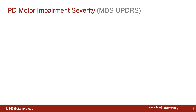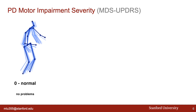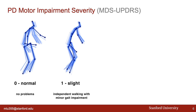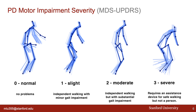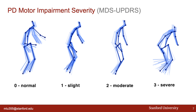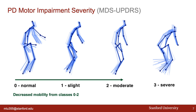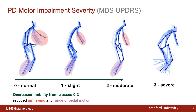In MDS-UPDRS, gait is ranked on a 5-point scale. In these figures, the dark lines represent the current pose, and the fading skeletons show movement over time. When an individual is scored 0, it means they probably do not have problems in their movement. Score 1 means the individual can walk independently but with minor gait impairments, while score 2 refers to substantial gait impairments. Individuals with score 3 require an assistance device for safe walking. We have removed score 4 from our analysis, because these individuals cannot move without help from another person, and therefore their gait sequences are uninformative for this task. Classes 0–2 progressively decrease in mobility, with reduced arm swing and range of pedal motion, i.e., reduced stride amplitude and foot lift, while class 3 becomes imbalanced.